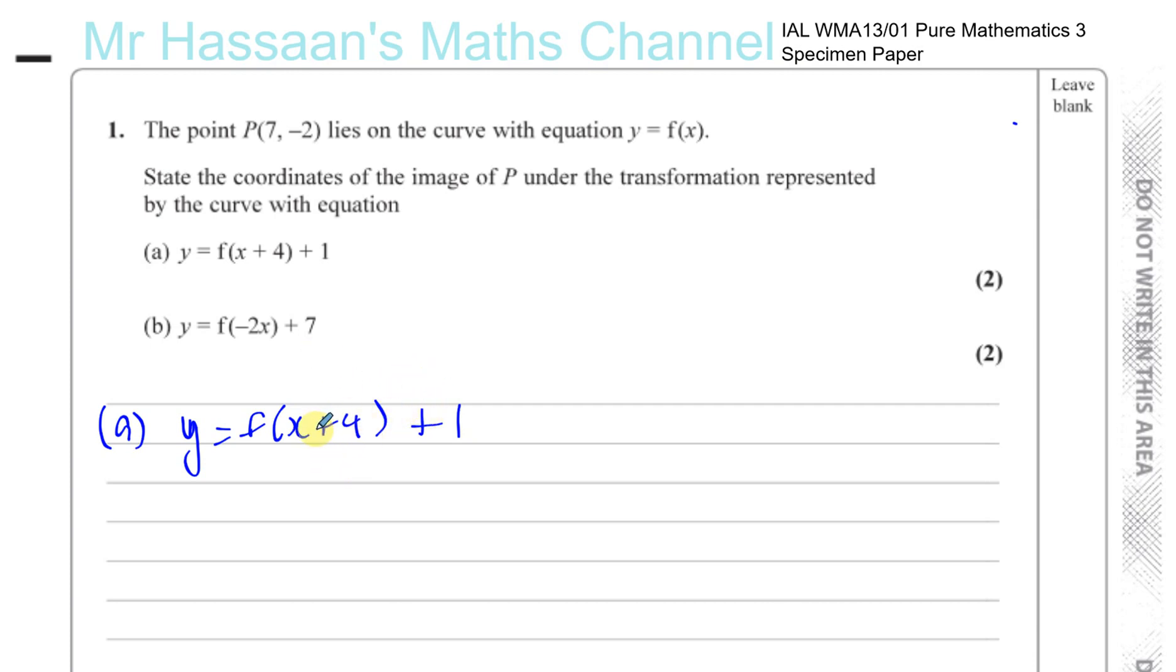What's inside the function always acts kind of the opposite. So x + 4 represents a horizontal translation of 4 units to the left, and +1 represents a vertical translation of 1 unit upwards. So we take the point P(7, -2) and its image is going to be: for the x-value, we take away 4 to get 3, and for the y-value, we add 1 to get -1. So that's the answer to part A.